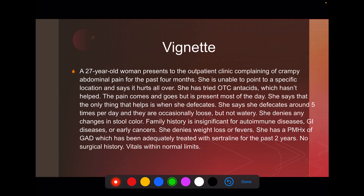The chief complaint is crampy abdominal pain times four months, so we're dealing with chronic abdominal pain. We've got a big differential, but we really want to rule out IBD — inflammatory bowel disease — because that tends to present around this age. She doesn't notice any changes in stool color. She does have loose stools, but she doesn't really have any feverish symptoms or weight loss — those constitutional symptoms we typically associate with chronic inflammation. Another thing that really points to IBS: the pain gets better when she defecates. That is very, very common with IBS. For your exam, you need to know that.